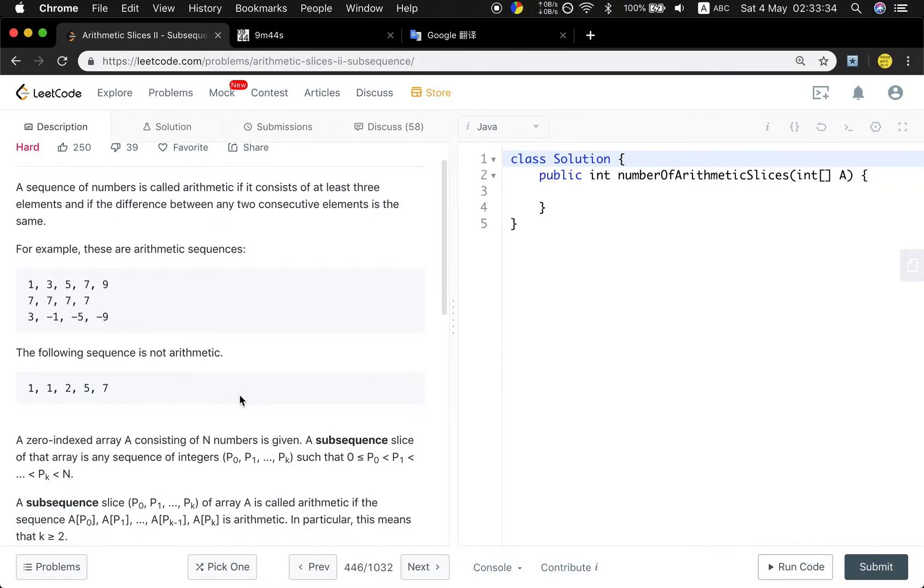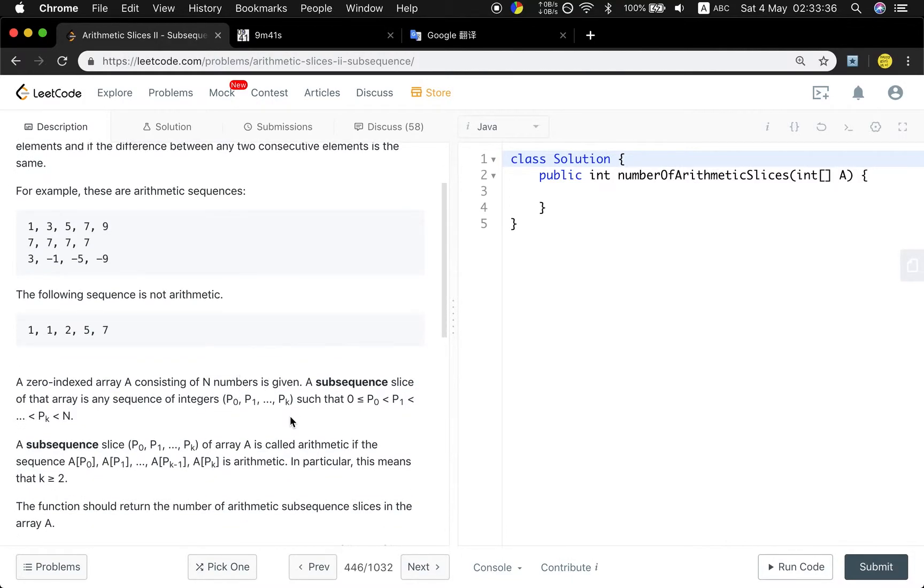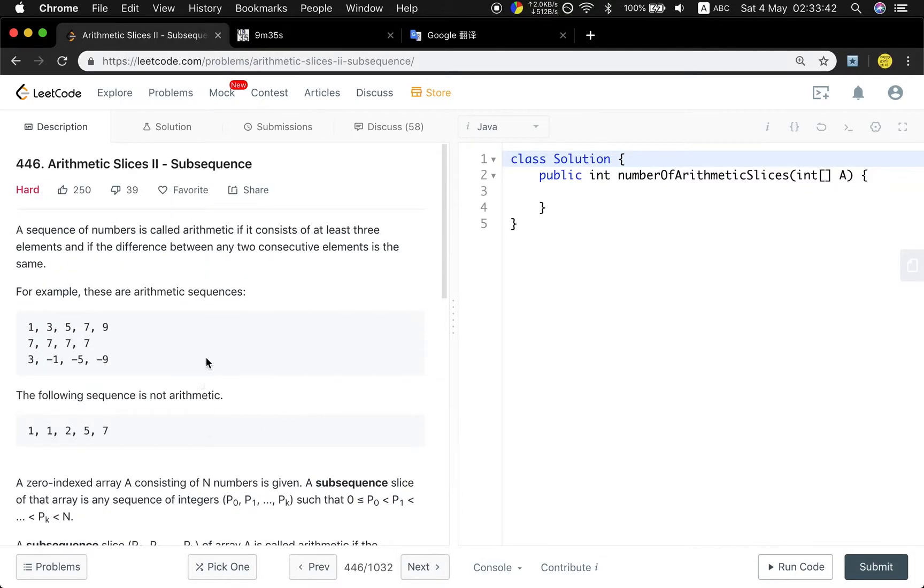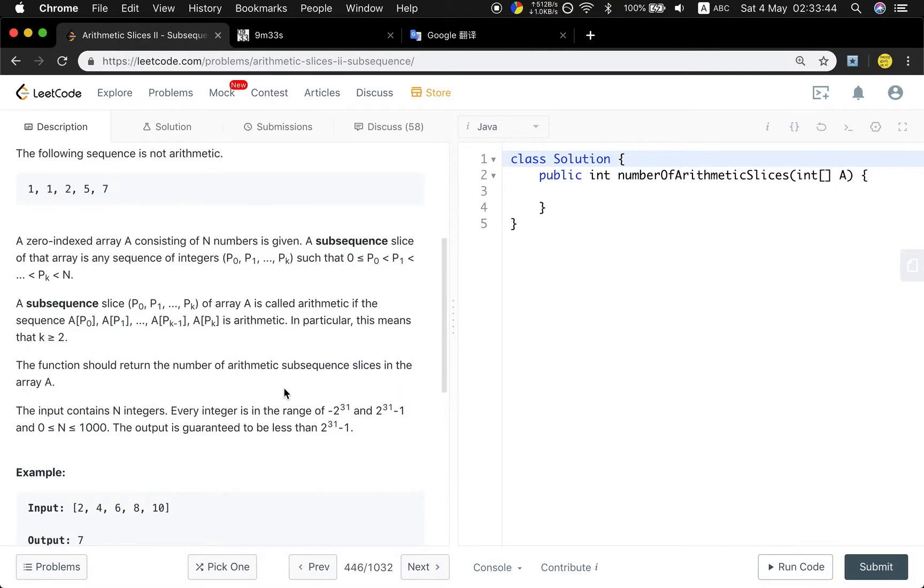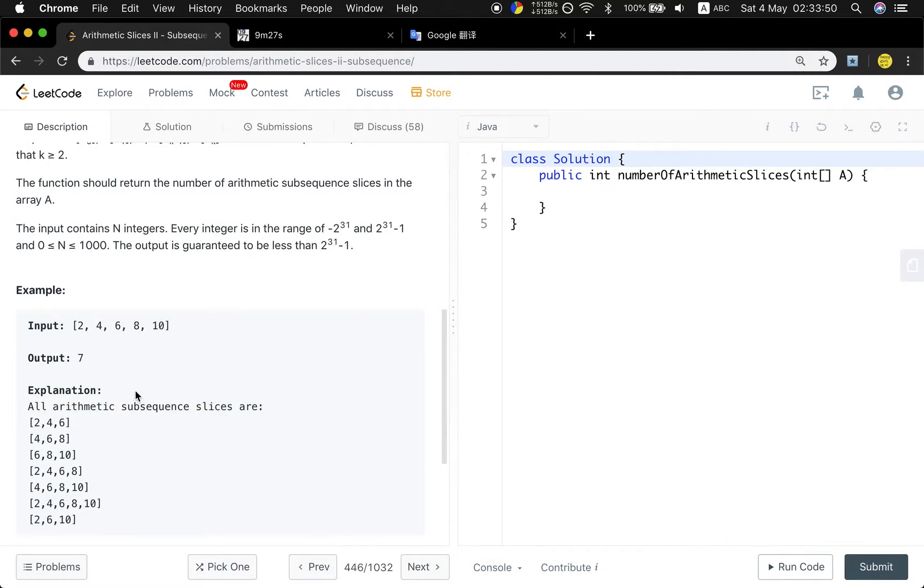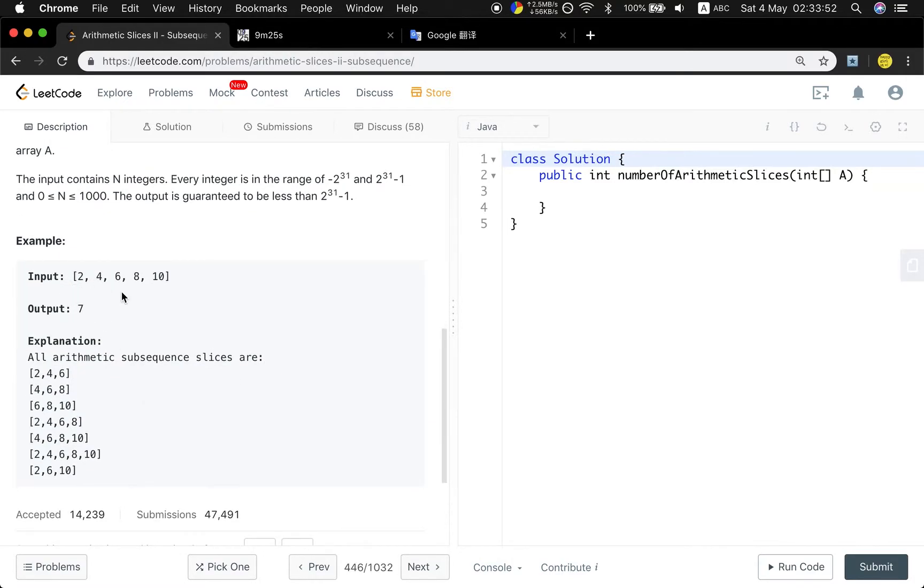So in this problem we need to count the subsequences that are arithmetic slices. In the previous question they must be consecutive, but in this question they don't need to be. So in this case you will see the 2, 6, 10 is also counted.